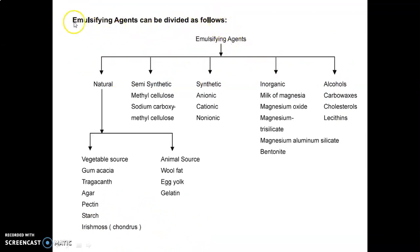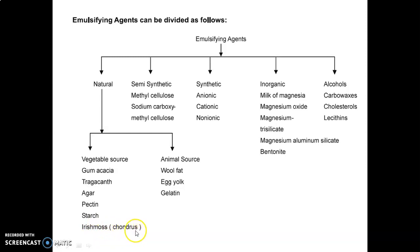Emulsifying agents can be divided as follows: natural, semi-synthetic, synthetic, inorganic, and alcohols. Natural agents include vegetable sources — gum acacia, tragacanth, agar, pectin, starch, and Irish moss (Chondrus) — and animal sources such as wool fat, egg yolk, and gelatin. Semi-synthetic agents include methyl cellulose and sodium carboxymethyl cellulose (sodium CMC). Synthetic agents are anionic (negative charge), cationic (positive charge), and non-ionic (charge-less). Inorganic agents include milk of magnesia, magnesium oxide, magnesium trisilicate, magnesium aluminum silicate, and bentonite. Alcohols include carbowaxes and cholesterol lecithins.